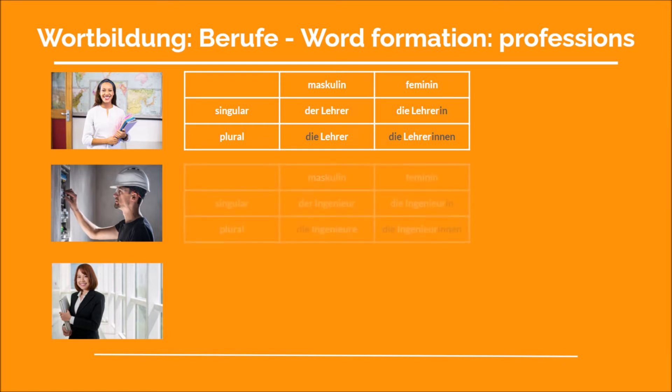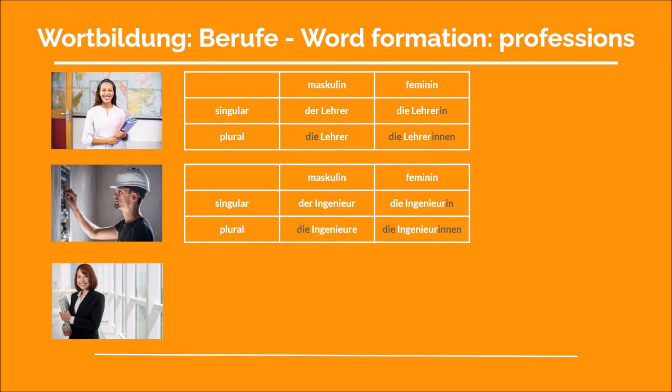Let's have a look at the engineer. In German, the engineer is der Ingenieur. And if it's a woman, we say die Ingenieuren. In plural, we say die Ingenieure — so Ingenieure has a slightly different ending than Lehrer. And if it's female, die Ingenieurinnen. The -E goes away, and all we need to do is put the ending -INN behind it.